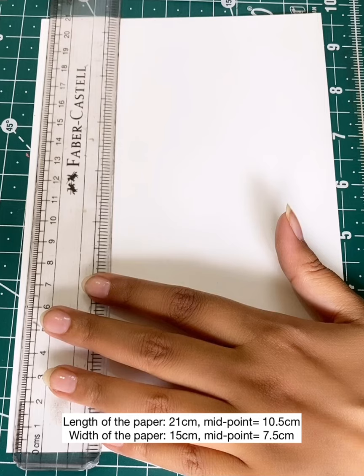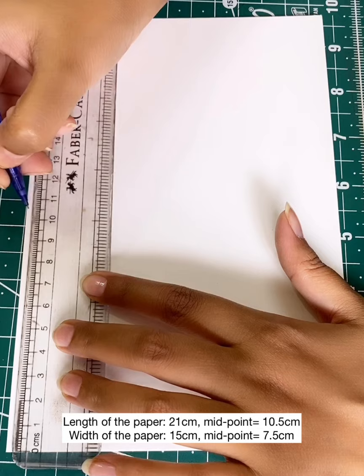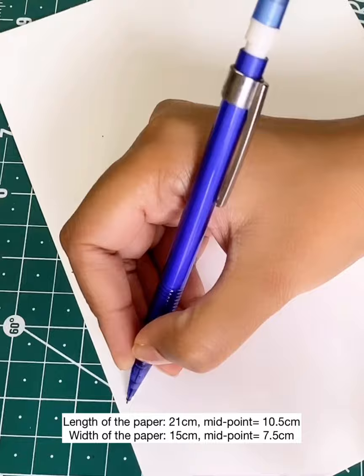We first need to find out the center of our page. The length of my page is 21 centimeters, so I'll be marking the midpoint at 10.5 centimeters.